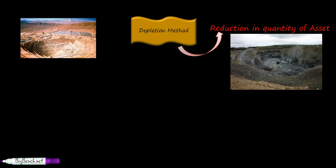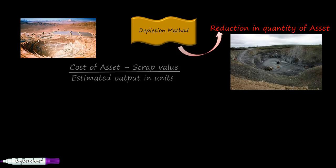So how to use this method? How to calculate the amount of depreciation under depletion method? As usual, the numerator remains the same: cost of asset minus scrap value. We usually write the life in years, but this time we are going to write estimated output in units.